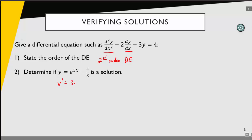In this case, y prime would be 3e to the 3x, and y double prime would be 9e to the 3x. Now we plug these values into our differential equation: y double prime minus 2y prime minus 3y equals 4. Substituting, we have 9e to the 3x minus 2 times 3e to the 3x minus 3 times (e to the 3x minus 4/3). The question is, is this equal to 4?